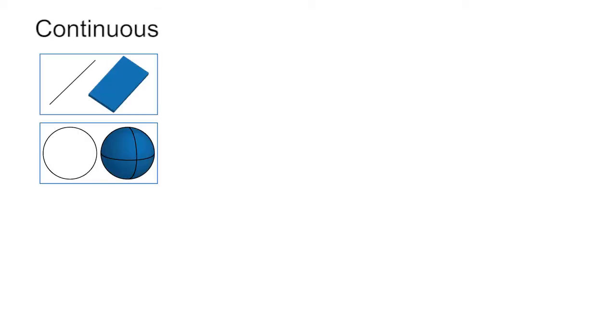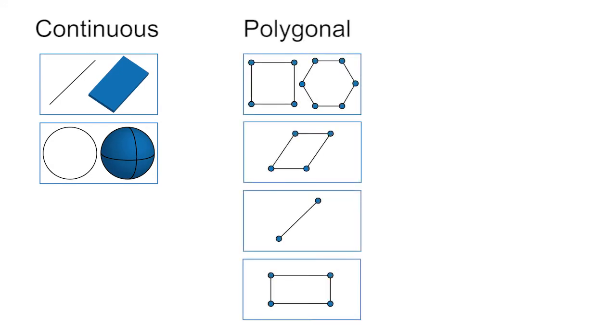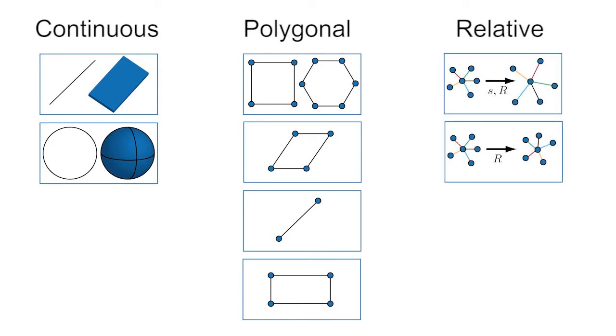We present projection operators for continuous shapes, such as planes or circles, polygonal shapes such as line segments, regular polygons, or rectangles, and relative shapes that encode the class of transformations that elements of the original geometry can undergo during the optimization. Elements can include polygons, tetrahedra, or one-ring neighborhoods, for example.